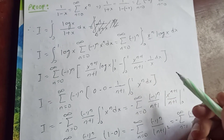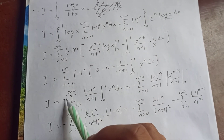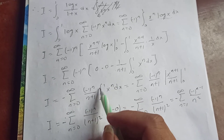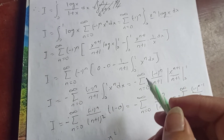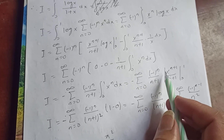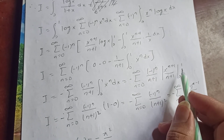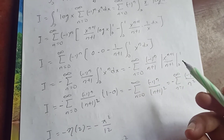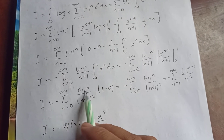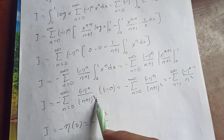Factoring out the negative sign, this gives negative sum from n equal to 0 to infinity of (−1)^n over (n+1) times the integral from 0 to 1 of x^n dx. Integrating x^n gives x^(n+1)/(n+1) evaluated from 0 to 1. So I equals negative sum from n equal to 0 to infinity of (−1)^n over (n+1)².